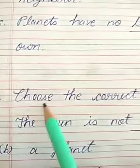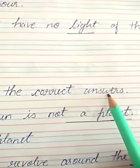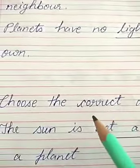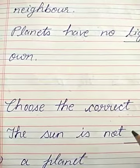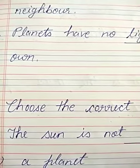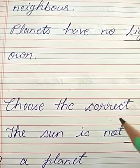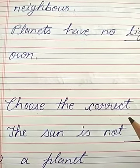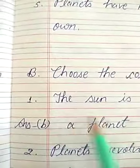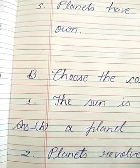Write Part B — Choose the correct answers. In this question, you get multiple options. Amongst all the multiple options, you have to choose the correct one answer. In your notebook, you will write only the correct answer.